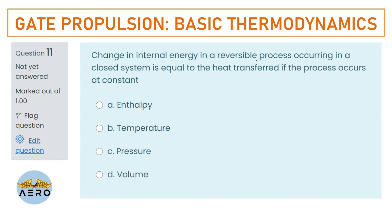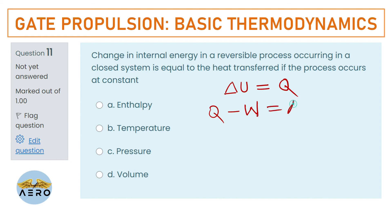Change in internal energy in a reversible process occurring in a closed system equals the heat transfer if the process occurs at constant — what condition? Recalling the first law: Q = ΔU + P·dV. For Q to equal ΔU, the term P·dV must equal zero.